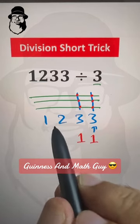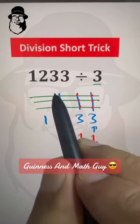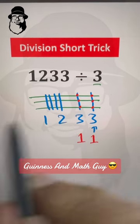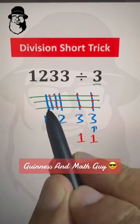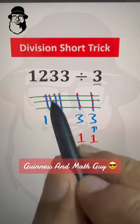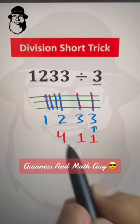So we will take 12, and how many lines I have to draw to get 12 points? It's 1, 2, 3, 4, 5, 6, 7, 8, 9, 10, 11, 12 points. Now 4 lines I have drawn, so 4 is our answer.